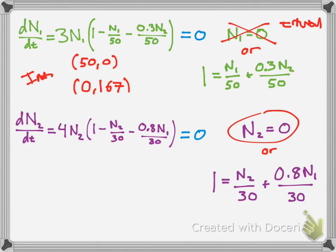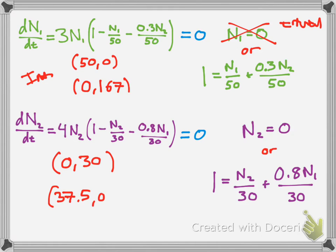Same thing, if you want the other intercept, you plug n2 into this equation. So we would have 0 comma 30 and 37.5 comma 0. I did these separately on a calculator, just to save time. You can check my math, I guess.